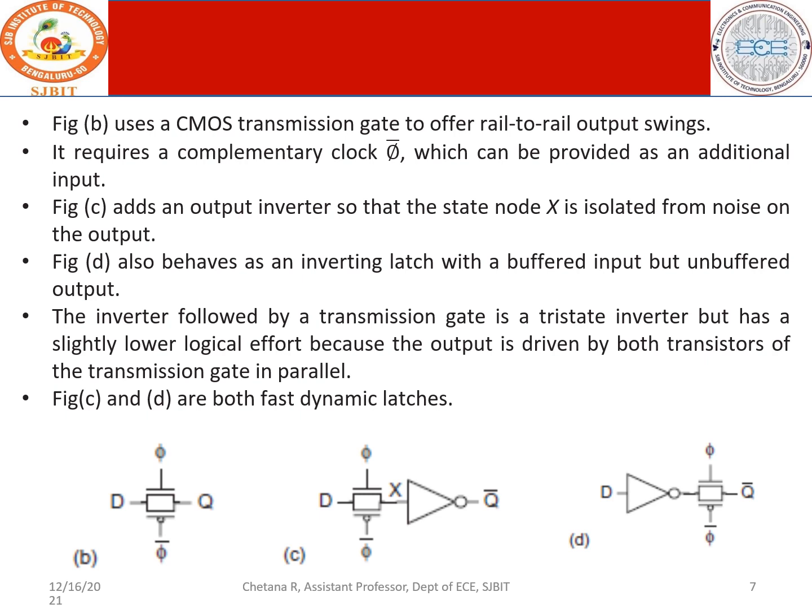Next, we have different types of CMOS latches. Figure B shows a CMOS transmission gate to offer rail-to-rail output swings. The first limitation - not swinging from exactly 0 V to VDD - can be overcome by using two complementary transistors in parallel forming a transmission gate. Using two complementary clock signals, this circuit eliminates the output swing limitation, though it requires complementary clocks as an additional input.